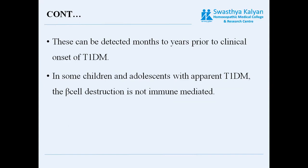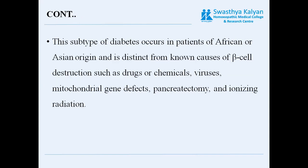In some children and adolescents with apparent Type 1 diabetes mellitus, the beta cell destruction is not immune-mediated but can be idiopathic. This subtype occurs in patients of African or Asian origin and is distinct from known causes of beta cell destruction such as drugs or chemicals, viruses, mitochondrial gene defects, pancreatectomy, and ionizing radiation.